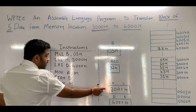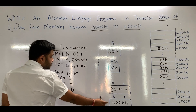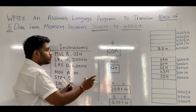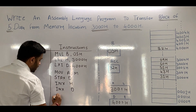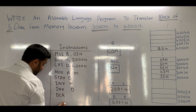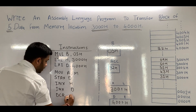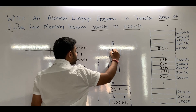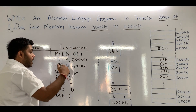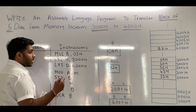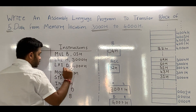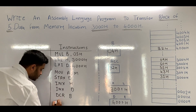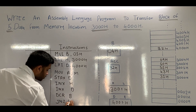Now the source pointer is pointing at 3001 and the destination is 4001. From the block of 5 data, 1 data is transferred, so we have to decrement the content of B as well. So we will use DCR B — the value of B will be decremented from 5 to 4. Now how many times do we perform this operation? Until the value of B becomes 0. After the DCR B instruction, we are going to use the instruction JNZ LOOP, and I will specify the LOOP label here.